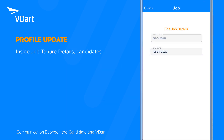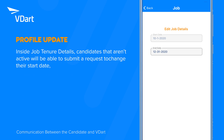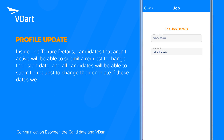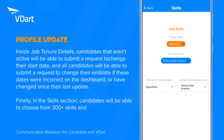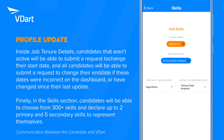Inside job tenure details, candidates that aren't active will be able to submit a request to change their start date, and all candidates will be able to submit a request to change their end date if these dates were incorrect on the dashboard or have changed since their last update. Finally, in the skills section, candidates will be able to choose from 300 plus skills and declare up to two primary and five secondary skills to represent themselves.